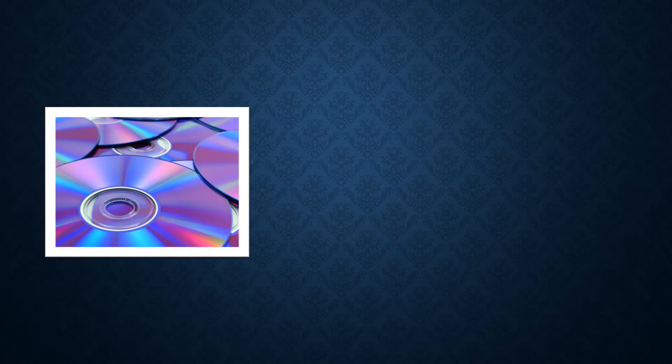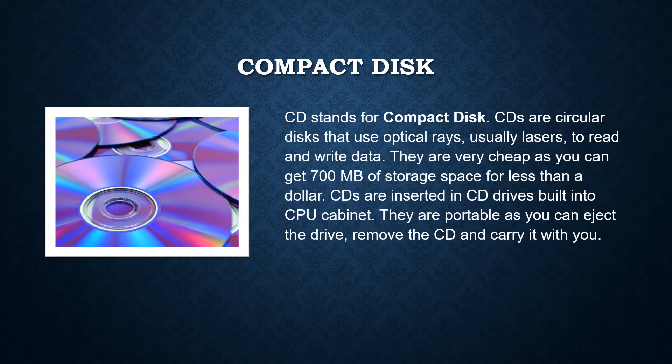Another type of secondary storage device is the compact disk. Compact disks or CDs are circular disks that use optical rays, usually lasers, to read and write data. They are very cheap — you can get 700 MB of storage space for less than a dollar. CDs are inserted in CD drives built into the CPU cabinet. They are portable as you can eject the drive, remove the CD, and carry it with you.